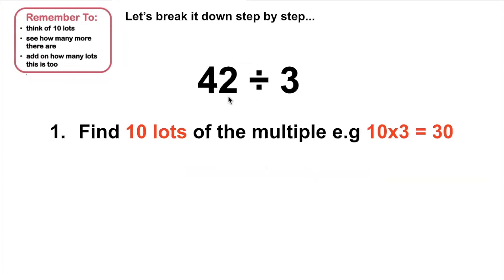Let's have a go at this one. 42 divided by 3. First I need to find 10 lots of the multiple I'm dividing by. So I'm dividing by 3, so I need to find 10 lots of 3, which I already know is 30.